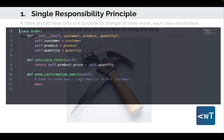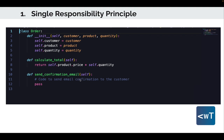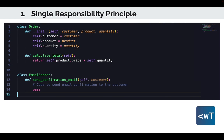Let's look at an example of code that violates this principle. In the code showing on the screen, the order class manages orders and sends confirmation emails, violating the SRP. In the long run, when the code base becomes more complex, this is going to be difficult to manage. By separating the responsibility of sending confirmation emails into its own class, EmailSender, we adhere to SRP, making the code base more straightforward to maintain and modify in the future.